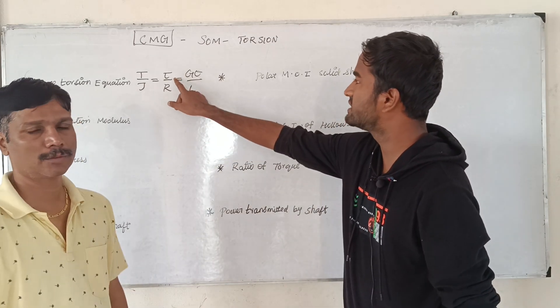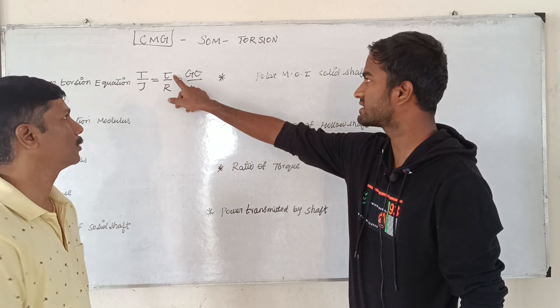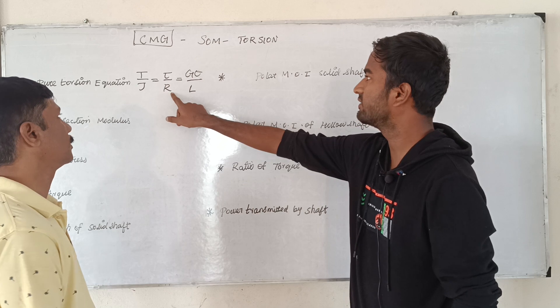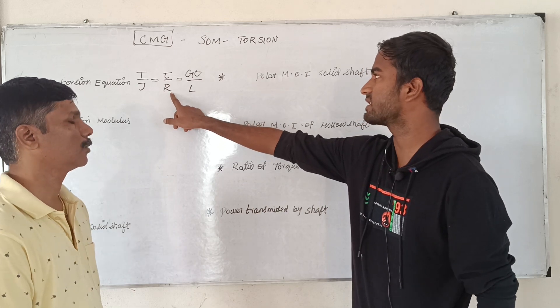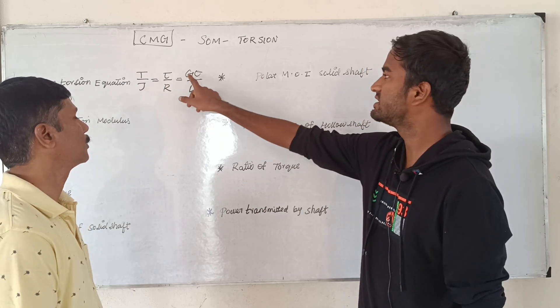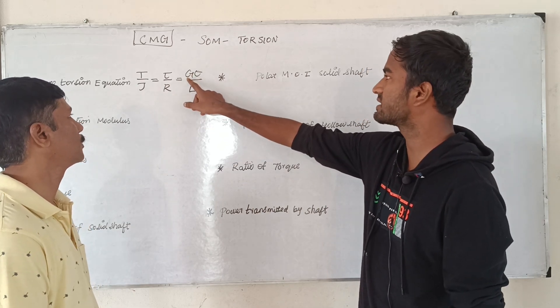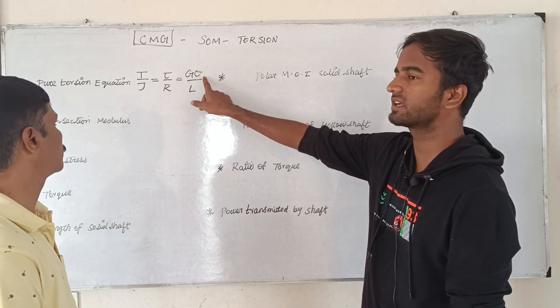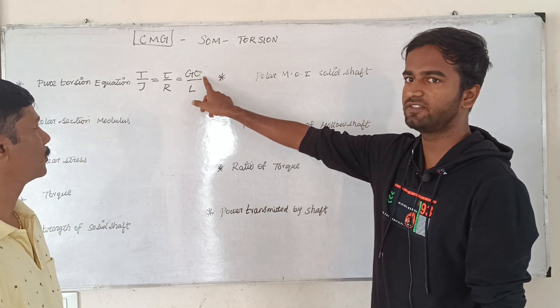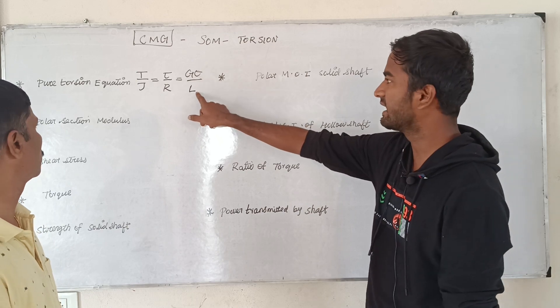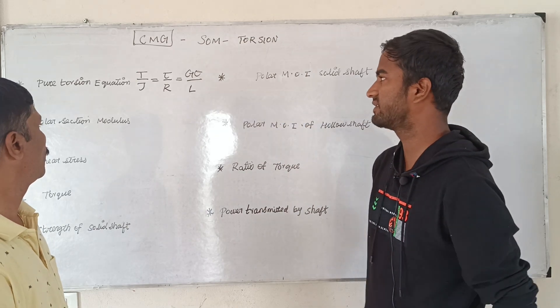Tau is the shear stress. R is the radius of shaft. G is the shear modulus. Theta is the angle of twist. L is the length of shaft.